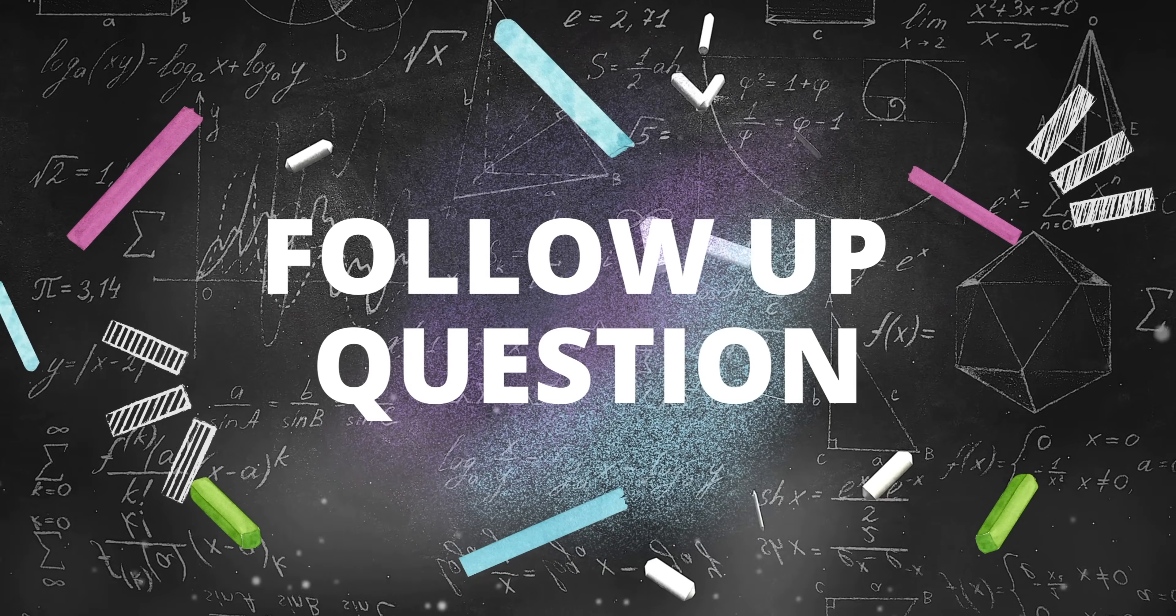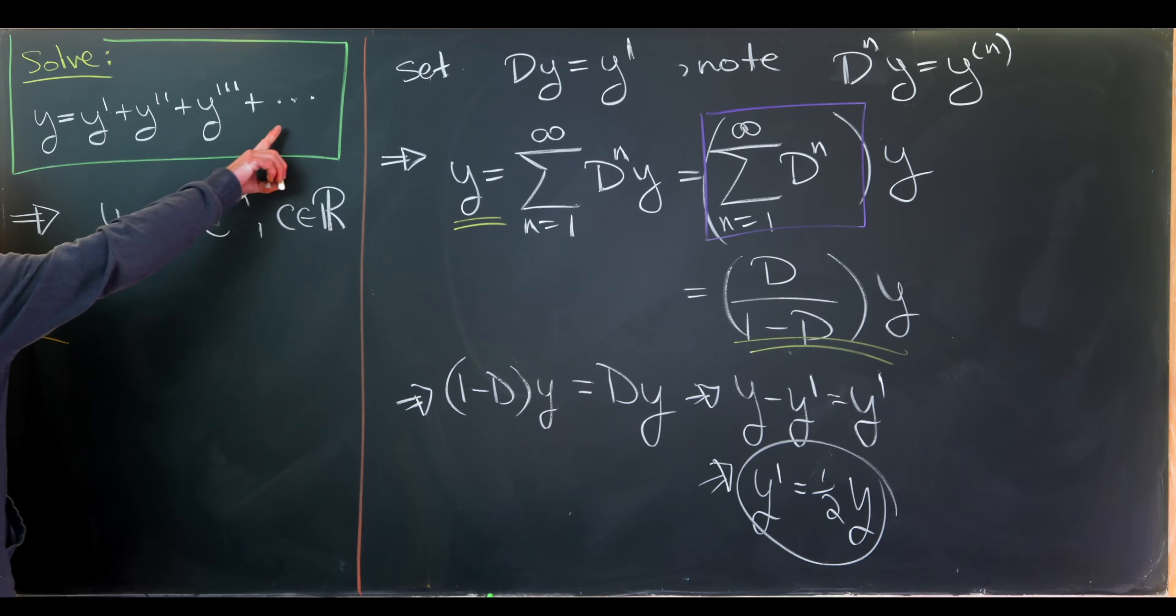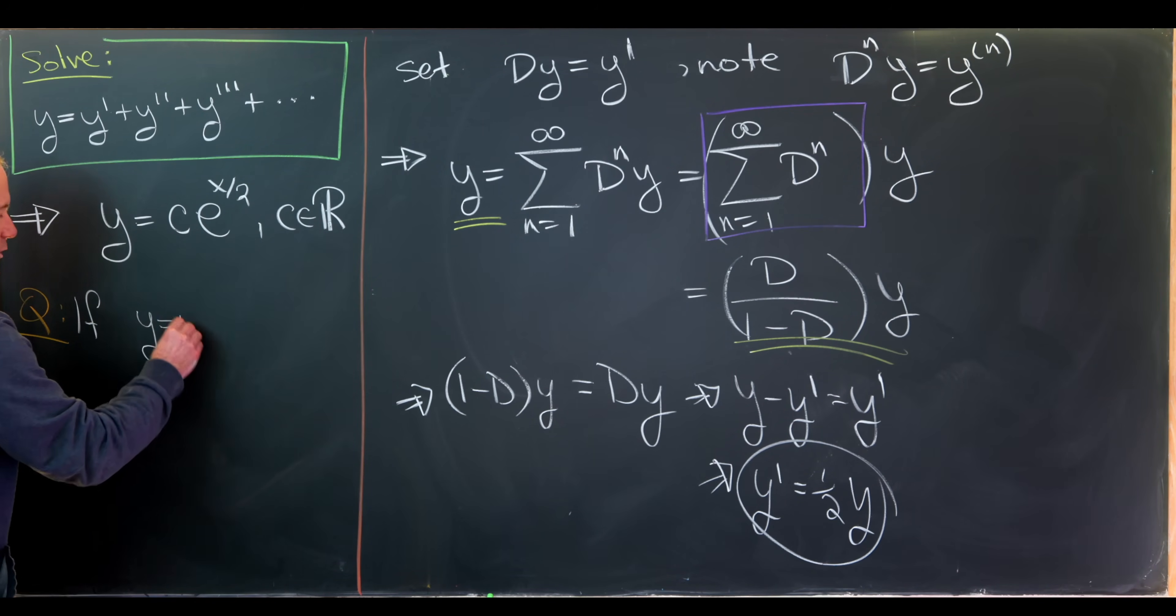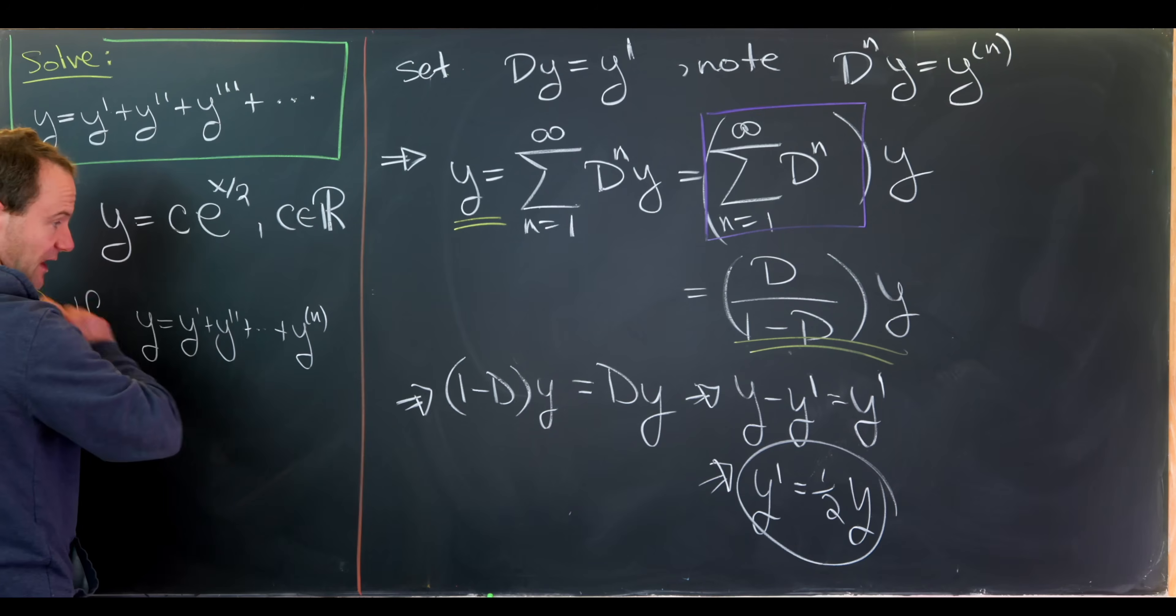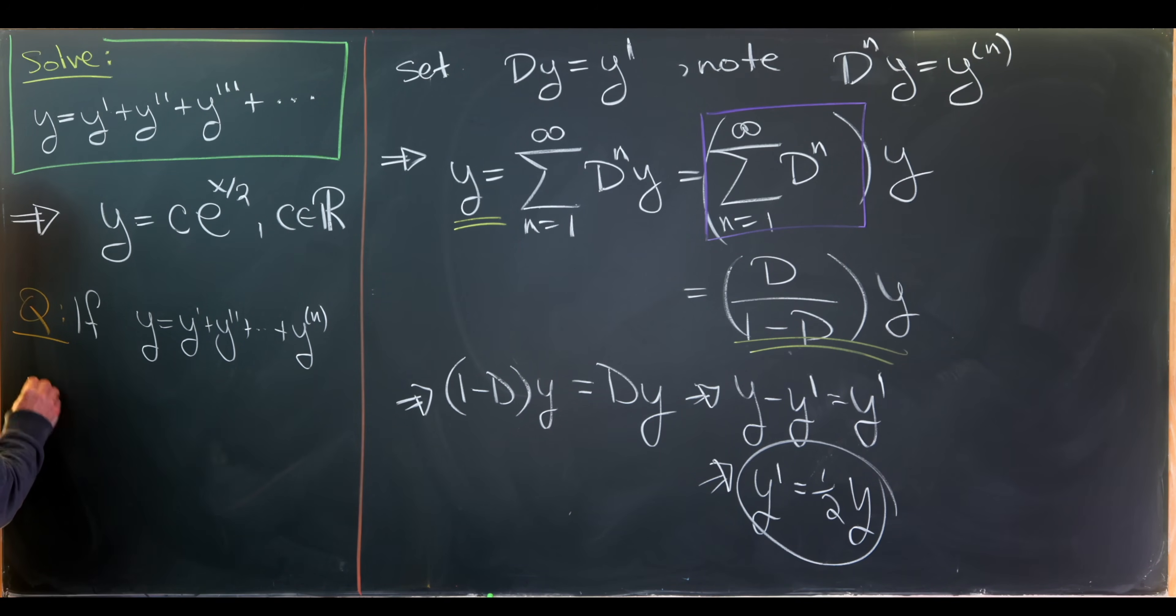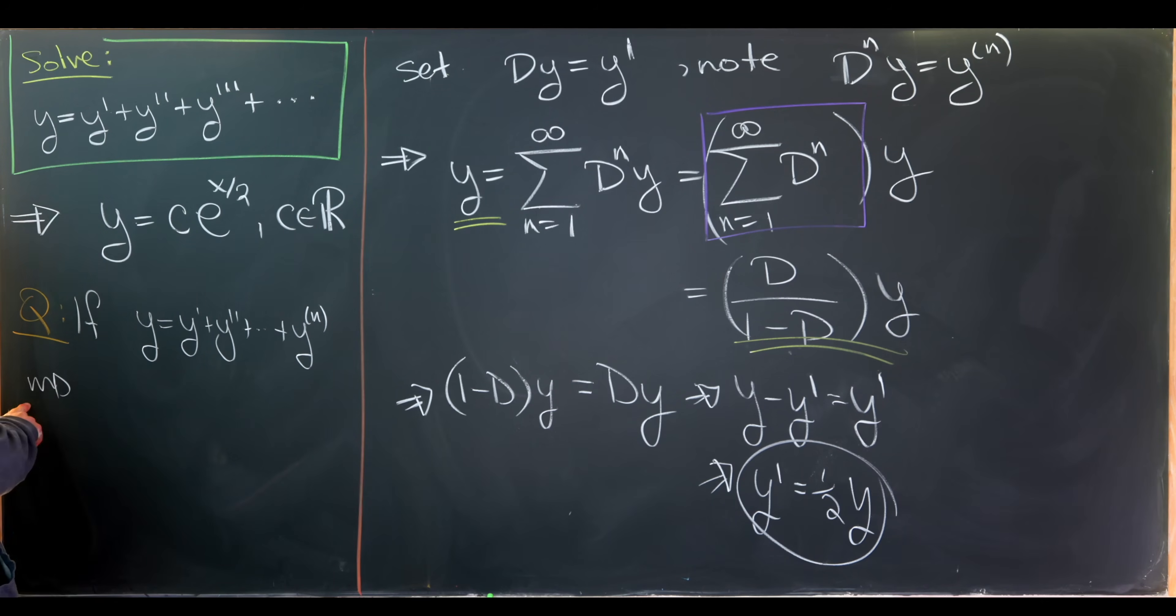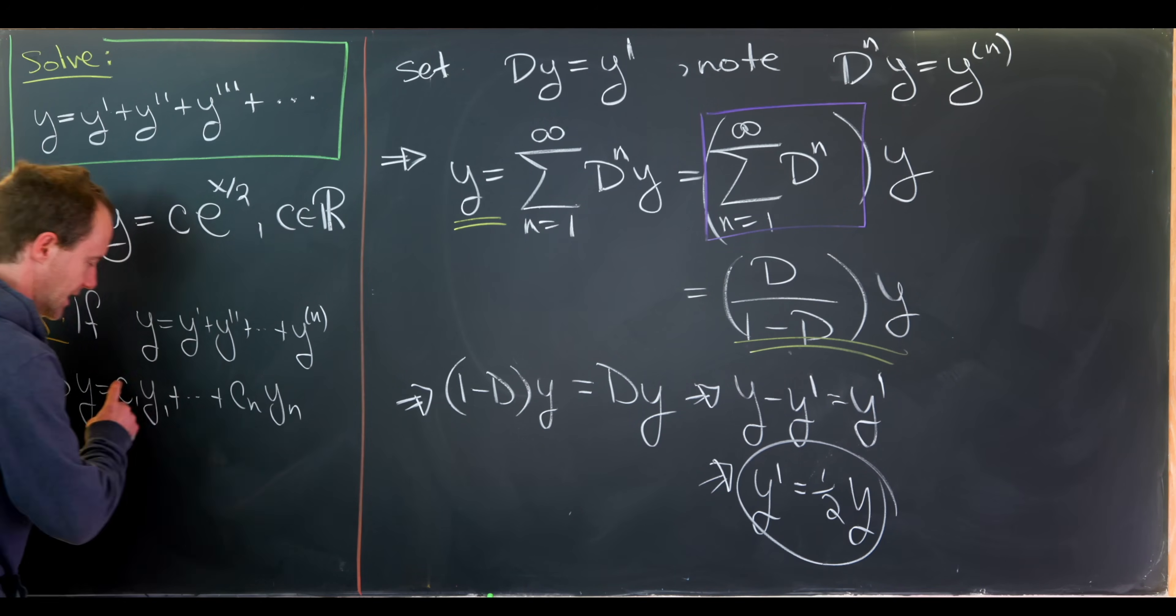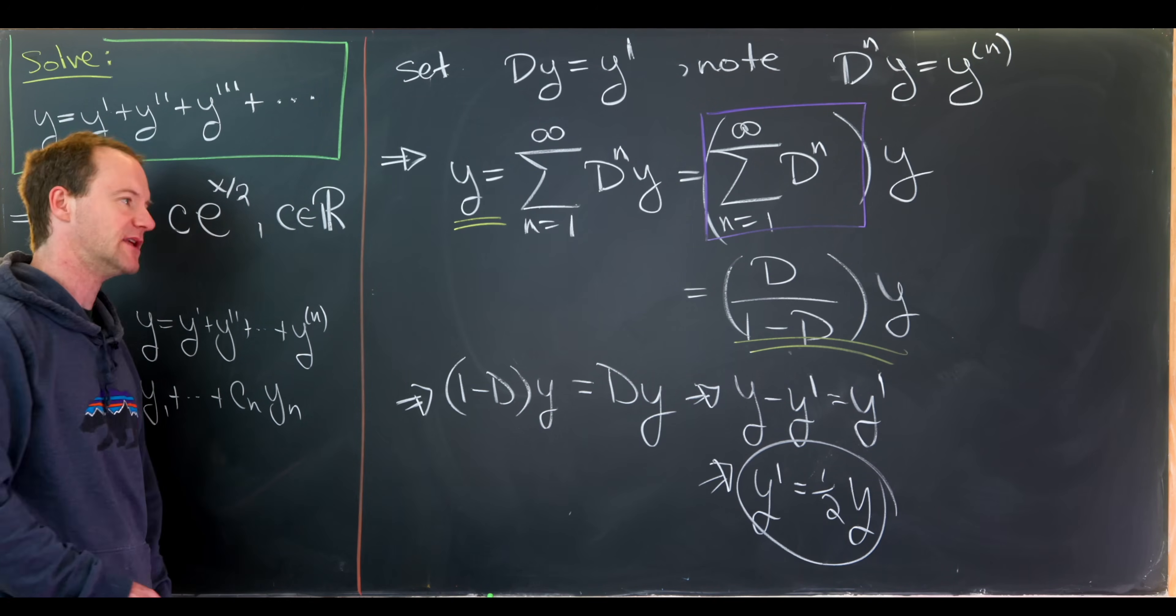So now let's maybe talk about a follow-up question here. We know that if we were to cut this off, so if we cut this thing off and we have y equals y prime plus y double prime all the way up to the nth derivative and then don't go further, then there are exactly n linearly independent solutions to this differential equation. So y equals c1 y1 all the way up to cn yn where the ci's are real numbers and the yi's are linearly independent functions.